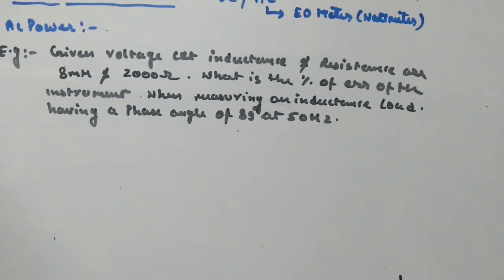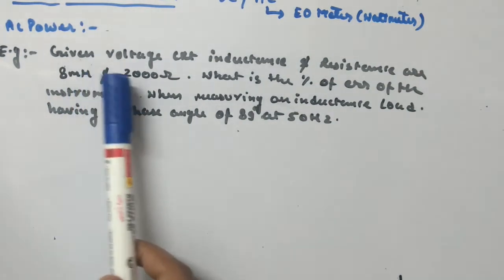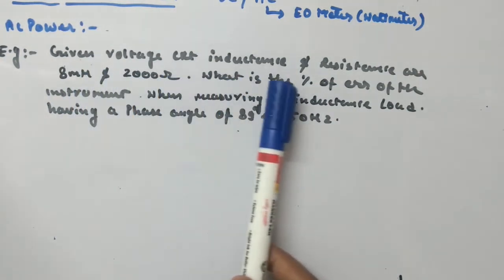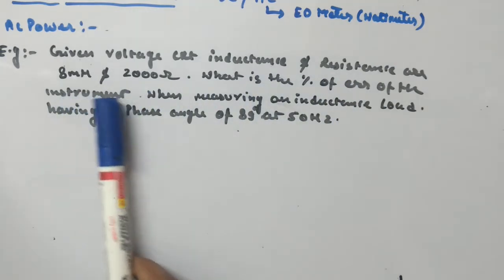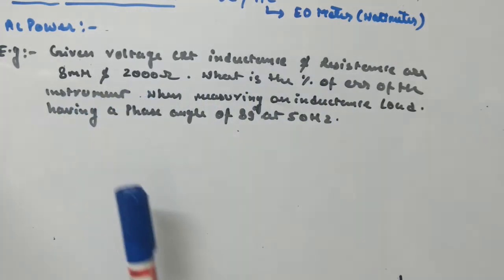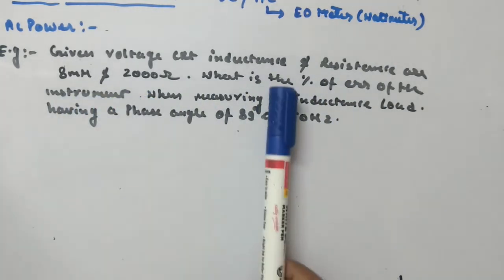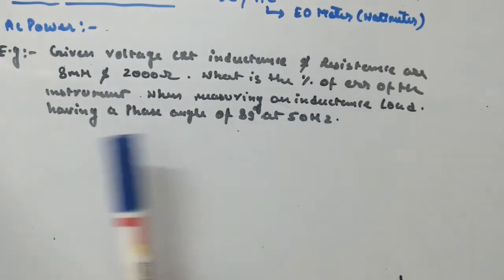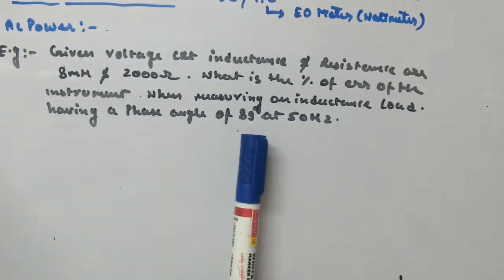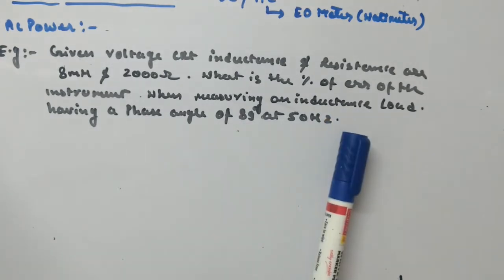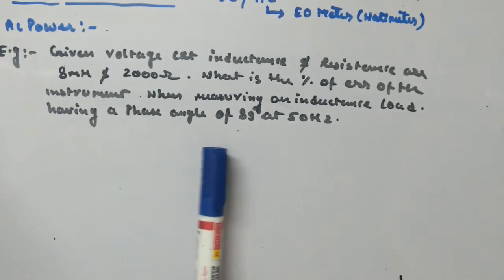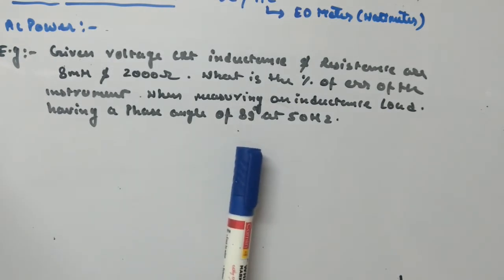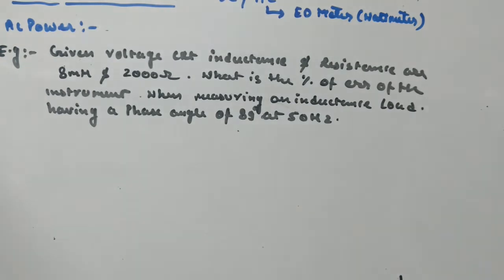Let's see an example. It is given that voltage circuit inductance and resistances are 8 mH and 2000 ohm. What will be the percentage of error of the instrument when measuring an inductance load having a phase angle of 89 degrees at 50 Hz?